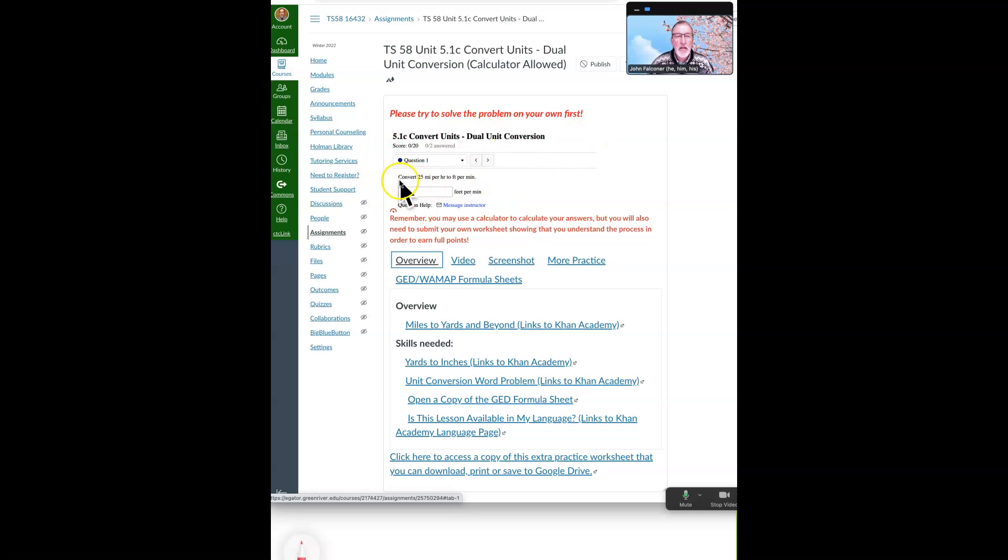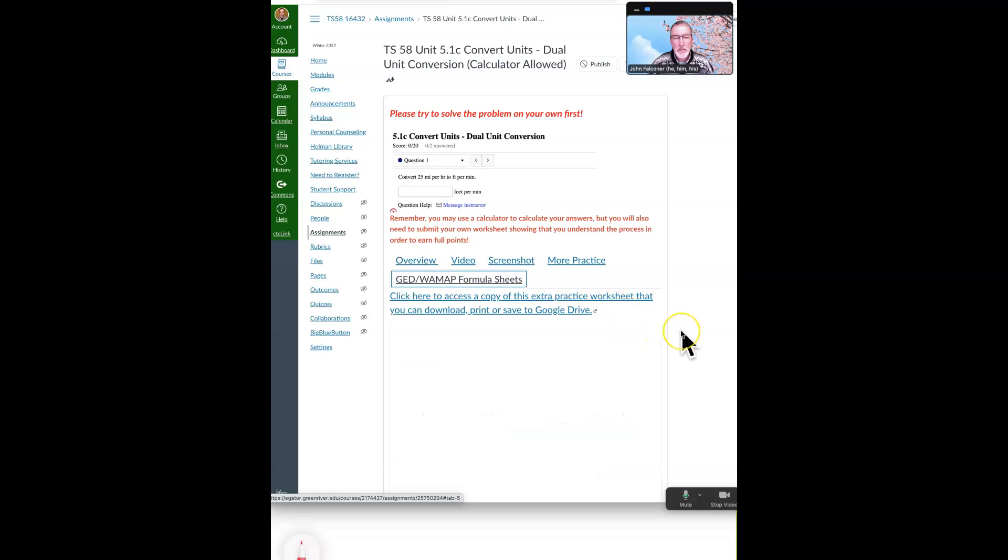So the example is convert 25 miles per hour to feet per minute. Again, you will need, or you may need, the WAMAP formula sheet. So if you click on this link, that tab will open.